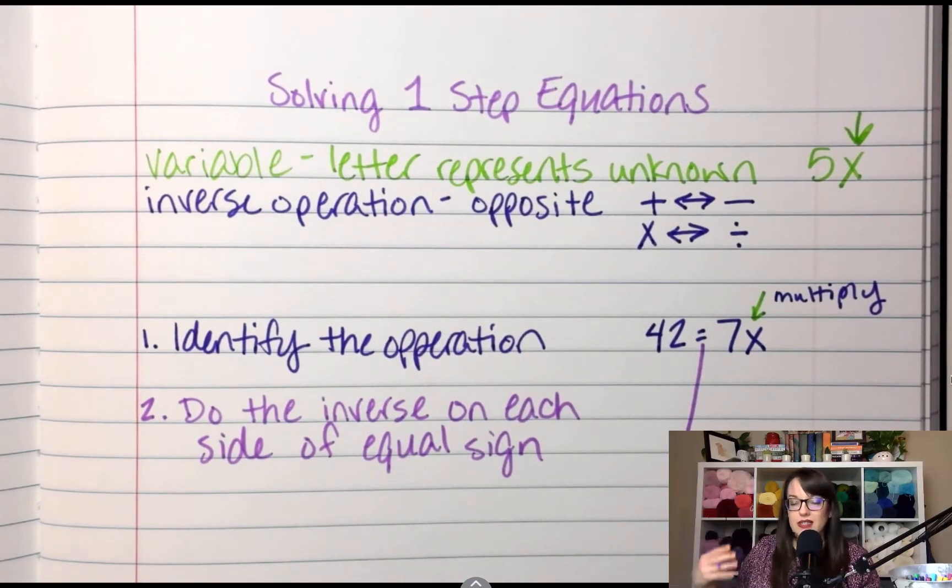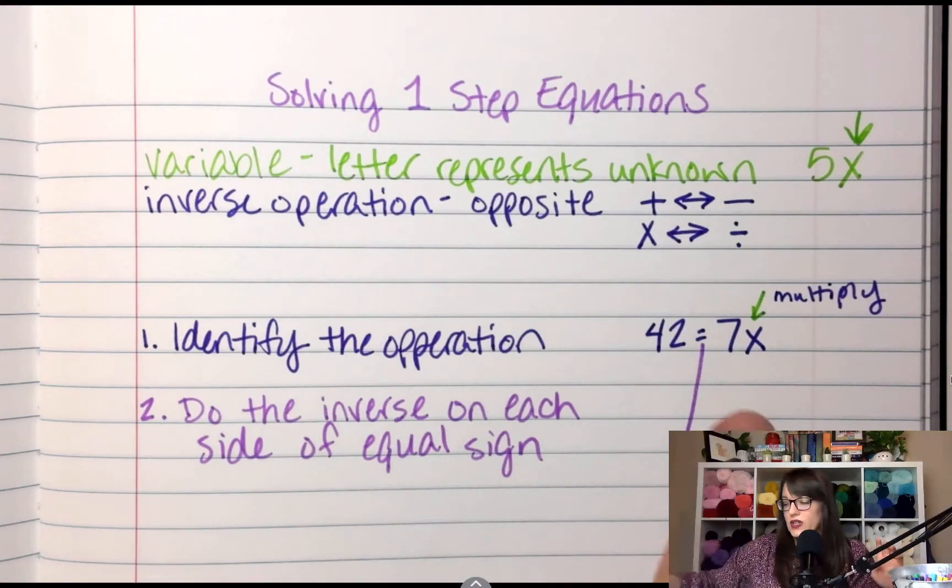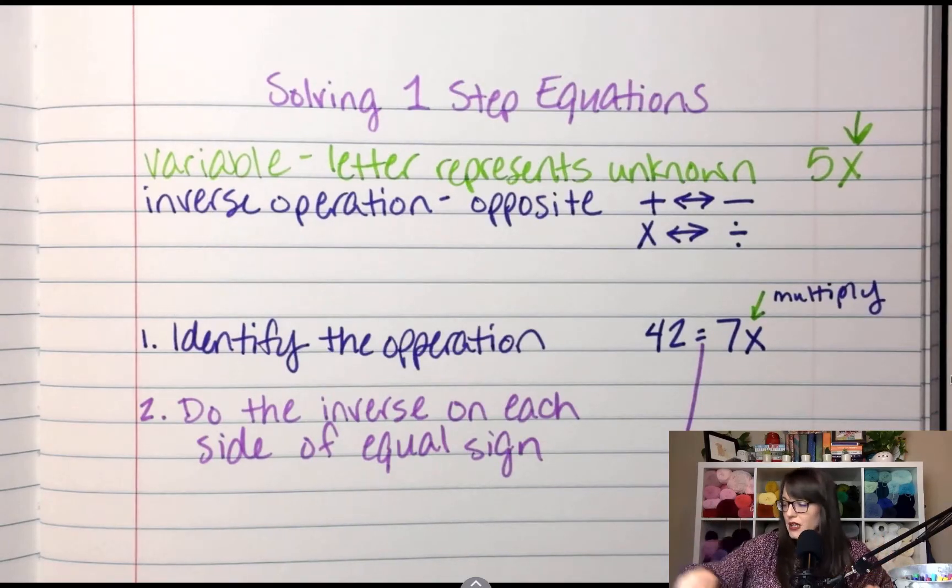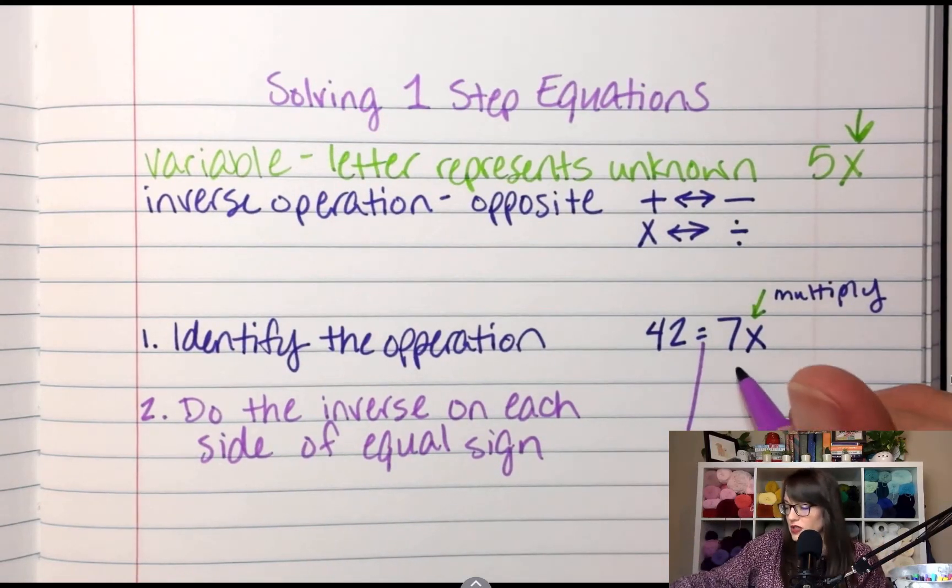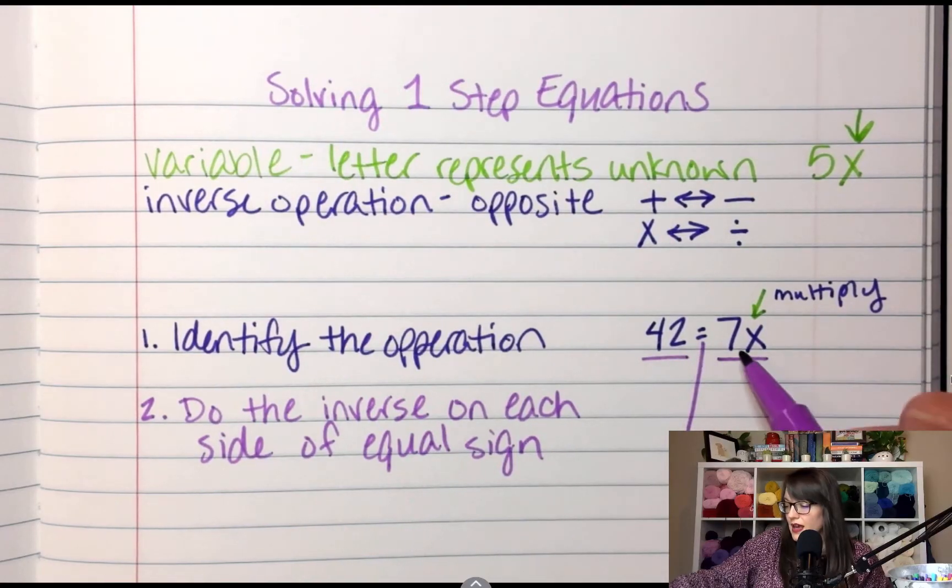So whatever I do on this side I have to do on this side because they're equal, and equal means the same. So if you add 7 to the left side, you have to add 7 to the right side. So what is the opposite of multiplying? Dividing. So what I'm going to do on each side to show division, I'm going to draw a line under both sides, and the opposite of multiplying by 7 is to divide by 7. So I'm going to divide both sides by 7.